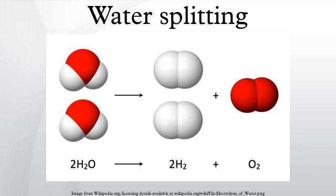In this process, aluminium functions as a compact hydrogen storage material because 1 kg of aluminium can produce up to 0.111 kg of hydrogen from water. When employed in a fuel cell, that hydrogen can also produce electricity, recovering half of the water previously consumed.